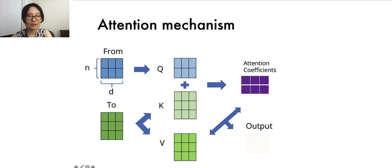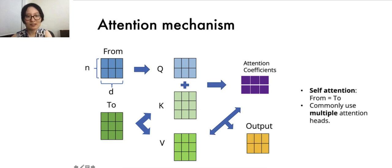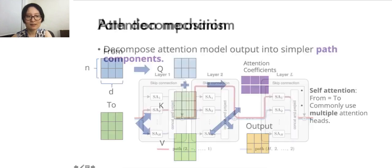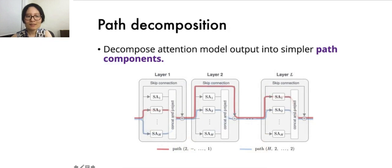In this work, we focus on commonly used self-attention architecture, where the from and to sequences are the same. Note that conventionally, multiple attention heads are computed and concatenated together. To better understand the results, let's first take a detour on a useful tool for self-attention networks that we develop in the process. It's a path decomposition.